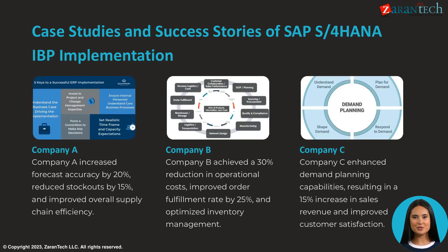Here are some examples of successful SAP S/4HANA IBP implementations. Company A increased forecast accuracy by 20%, reduced stockouts by 15%, and improved overall supply chain efficiency. Company B cut operational costs by 30%, improved order fulfillment by 25%, and optimized inventory. Company C enhanced demand planning, increasing sales revenue by 15% and customer satisfaction.